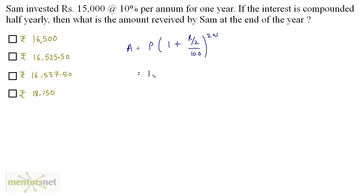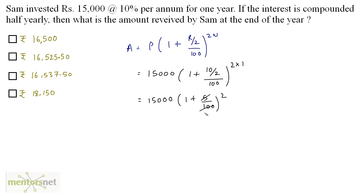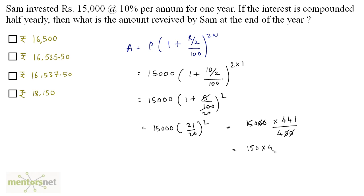With P = 15,000, R = 10, and N = 1 year, we get A = 15,000 × (1 + 5/100)^2. Since 5/100 = 1/20, this becomes 15,000 × (21/20)^2 = 15,000 × 441/400. Cancelling zeros gives 150 × 441/4, which equals Rs. 16,537.50.